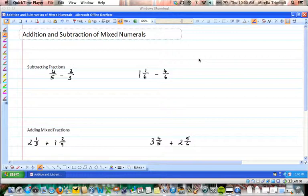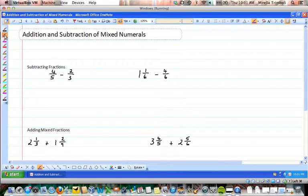Let's take a look at some subtracting fractions now. Here we have four fifths take two thirds. To make sure that we can subtract these, they need to have the same denominator.